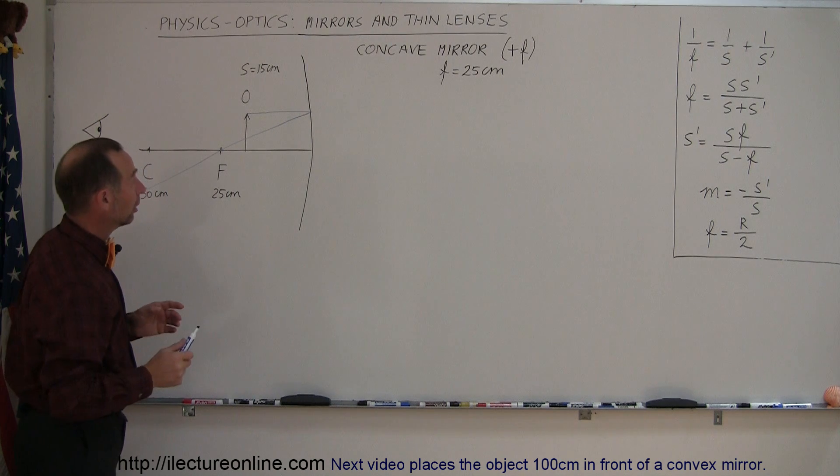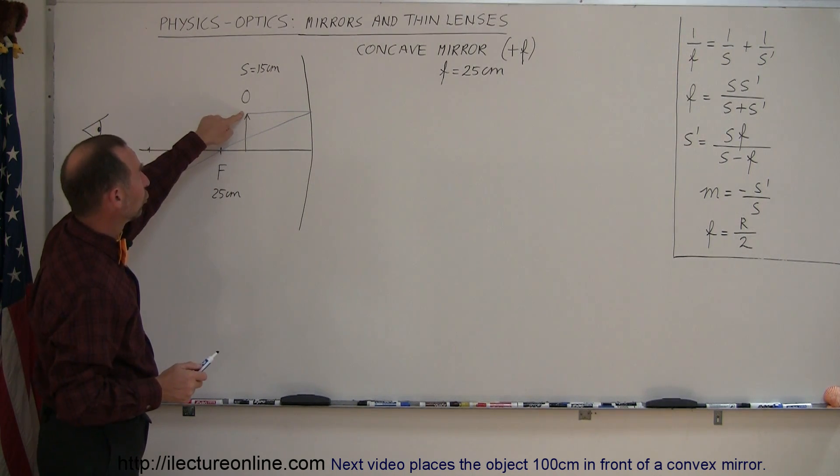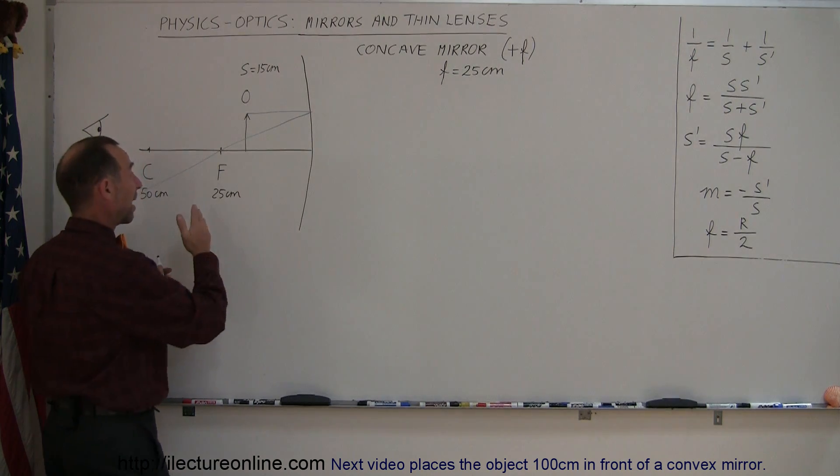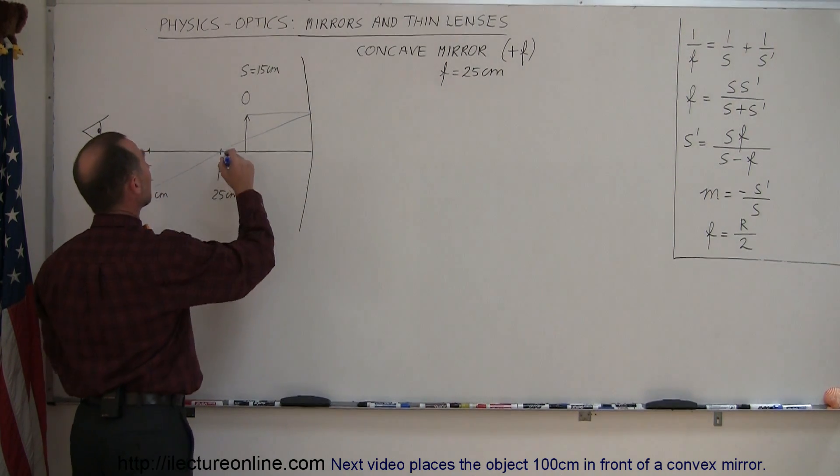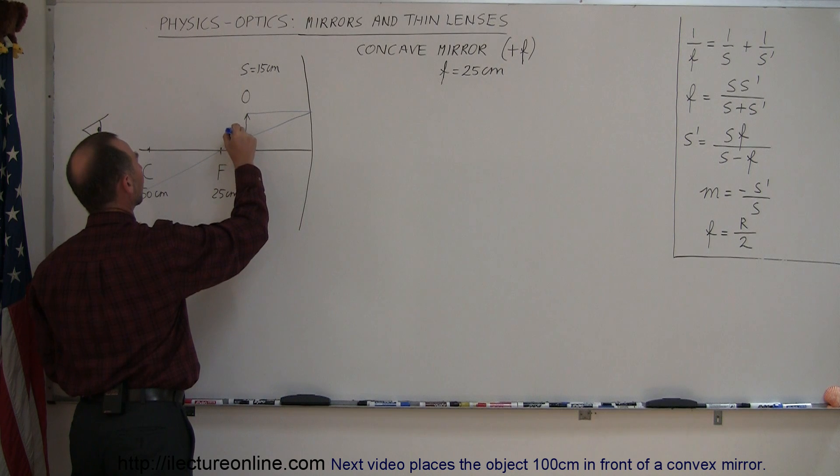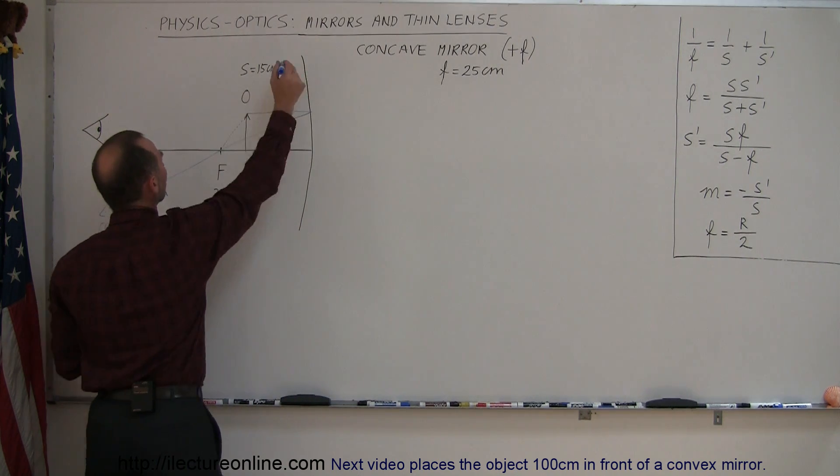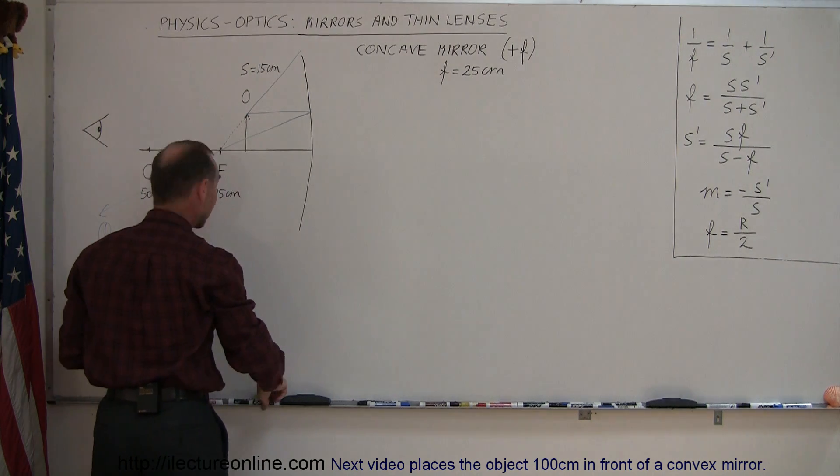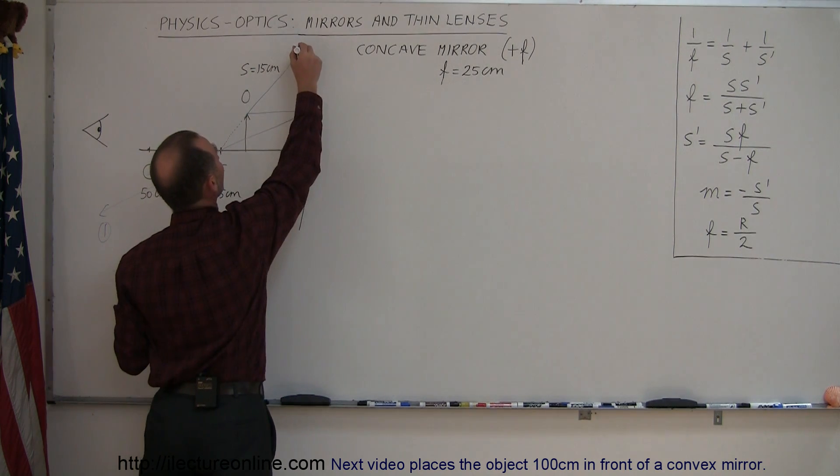The second ray that we draw is from the object through the focal point to the mirror. Now we have a little problem here because we're already past the focal point. So what you do then is you draw a little dotted line from the focal point to the object and then you continue on from there until we hit the mirror. My mirror should be a little bit longer. There we go.